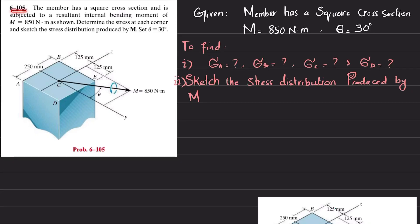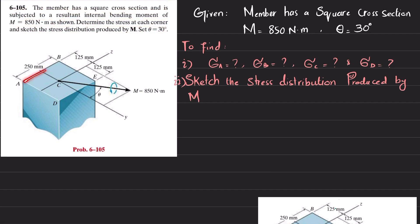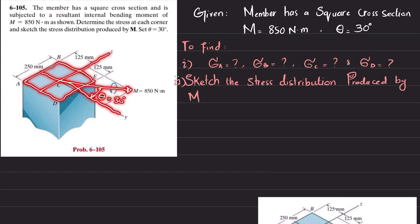Welcome back. Problem 6-105: a member has a square cross section and is subjected to a resultant internal bending moment of 850 newton-meters as shown. Determine the stress at each corner and sketch the stress distribution produced by M, where theta equals 30 degrees. This problem is the same as problem 6-104. The cross section is square, 250 by 250 millimeters, with a z-axis and y-axis. We have to find the stress at points A, B, E, and D.